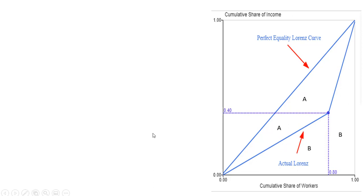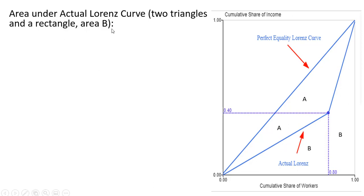The area under the actual Lorenz curve—we're going to call that area B. We want to solve for that area, and it consists of two triangles. Here's our first triangle. And then there's another triangle right here in the upper right hand corner, and below that second triangle is a rectangle.